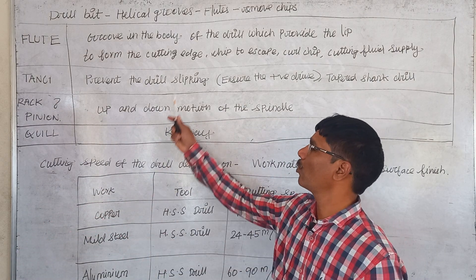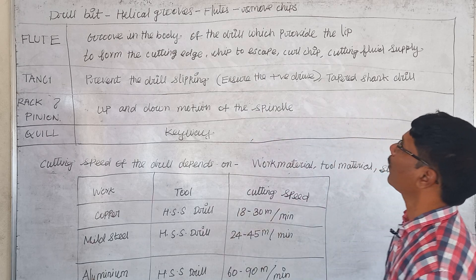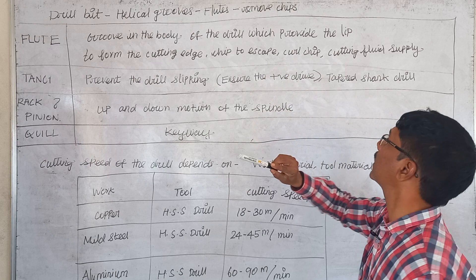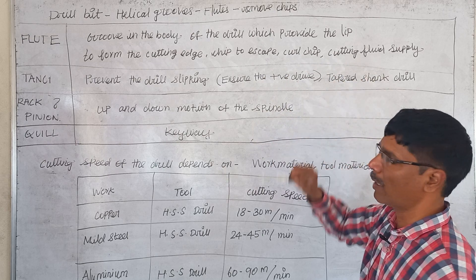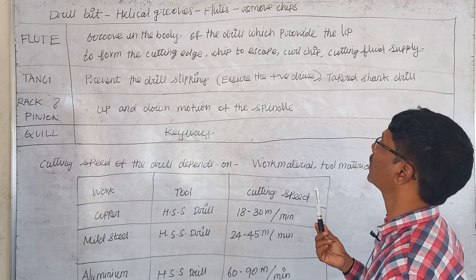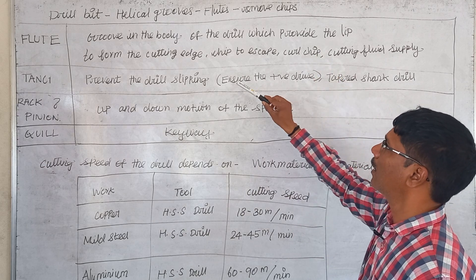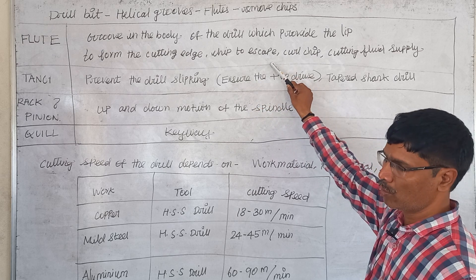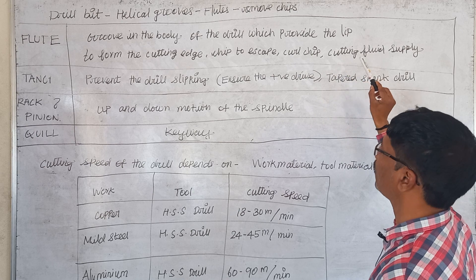A flute is the groove in the body of the drill which provides the lip to form the cutting edge, allows chips to escape and curl, and also supplies cutting fluid. These are the different purposes for which a flute can be used.